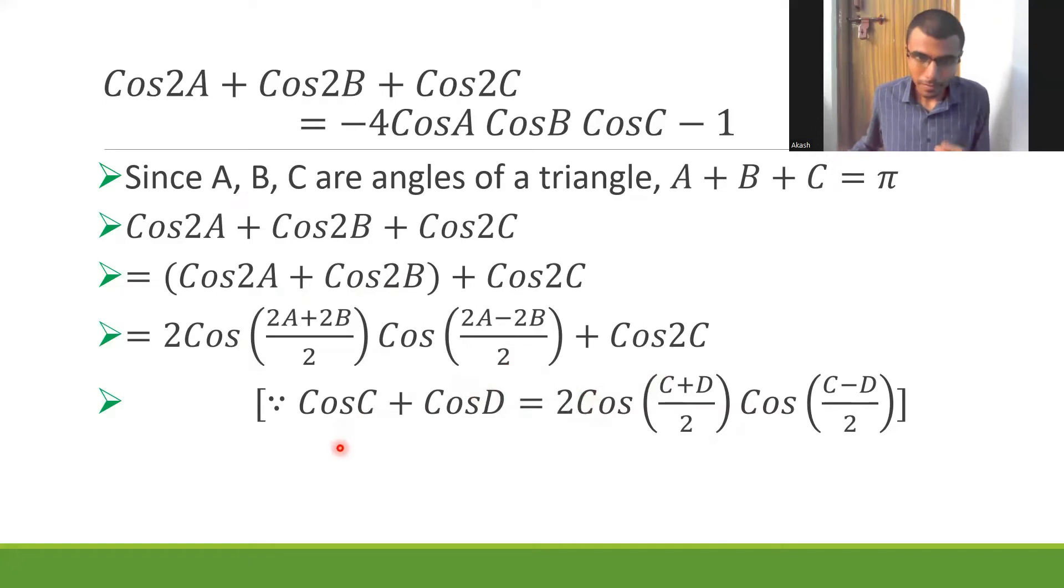Again, don't forget to mention this formula. Whenever such important formulas are used, you need to mention it. Now here 2 would get cancelled everywhere in these two brackets, and inside we're left out with 2cos(A+B) cos(A-B) + cos2C.